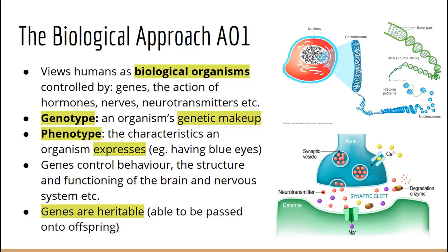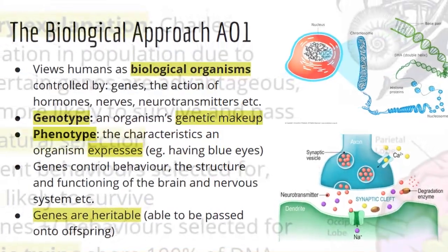Phenotype means the characteristics that an individual has as a result of their genotype and/or how it interacts with the environment. For example, someone may have brown eyes but carry the allele for blue eyes — this characteristic isn't expressed because it's recessive. Someone may carry cystic fibrosis but not express it. You can determine someone's phenotype from their genotype, but you cannot determine someone's genotype from their phenotype.